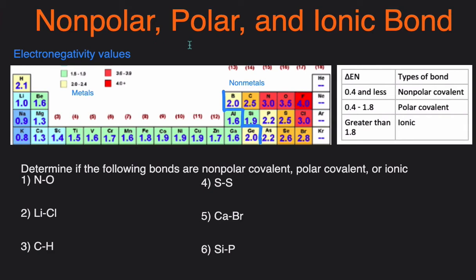Let's start with just a brief definition of each. Covalent bonds are bonds that exist between two non-metals, and ionic bonds are bonds that exist between a metal and a non-metal.